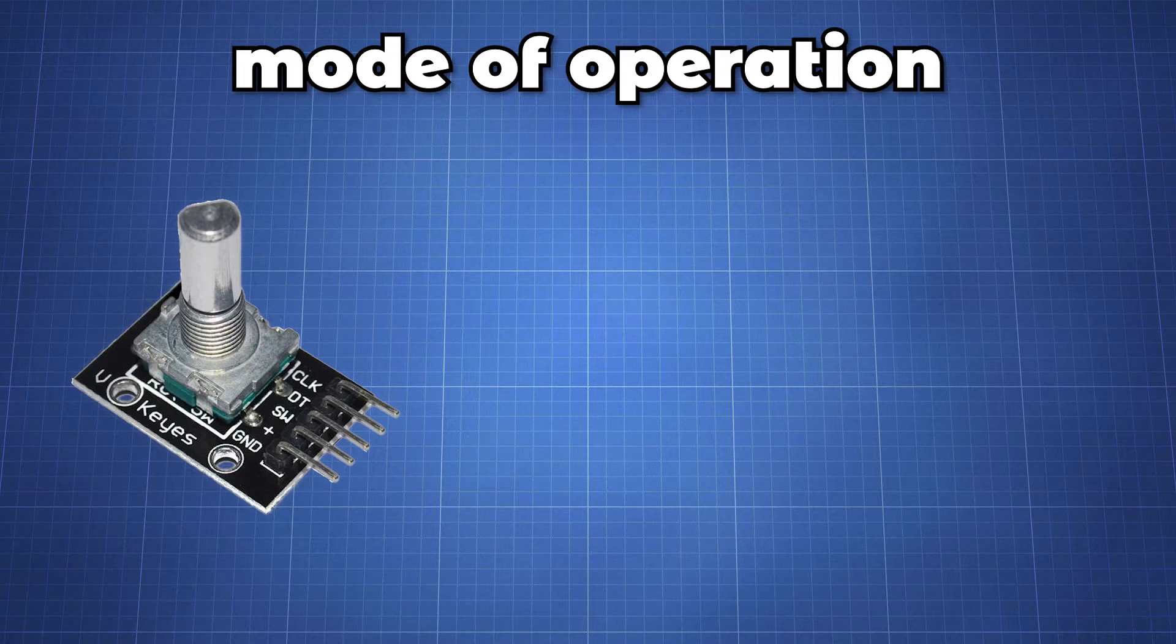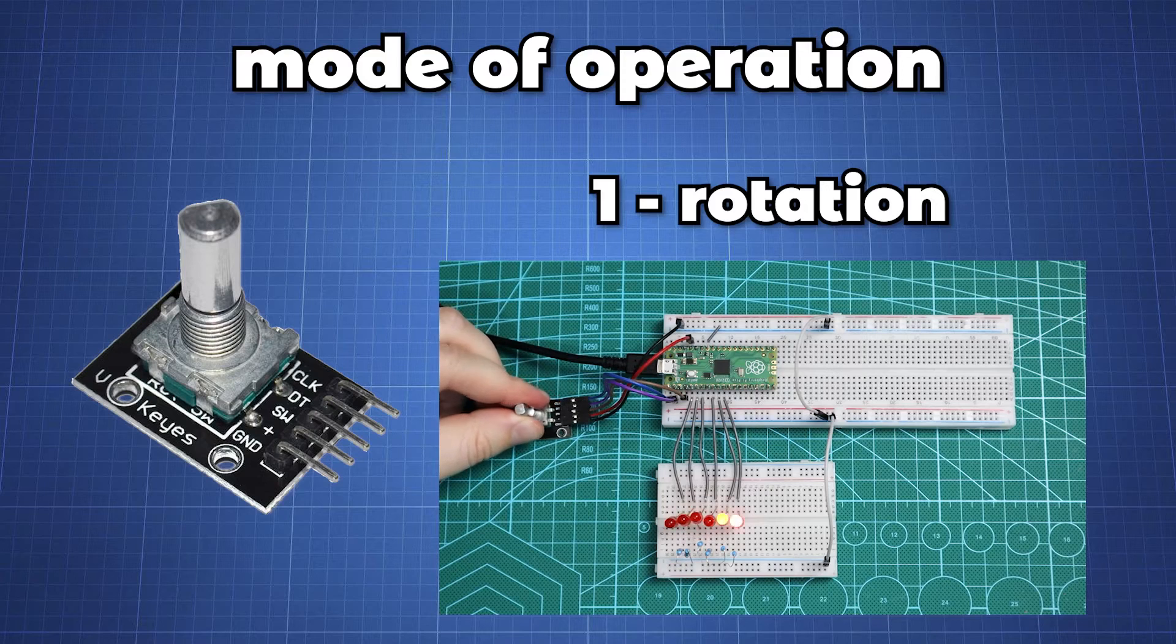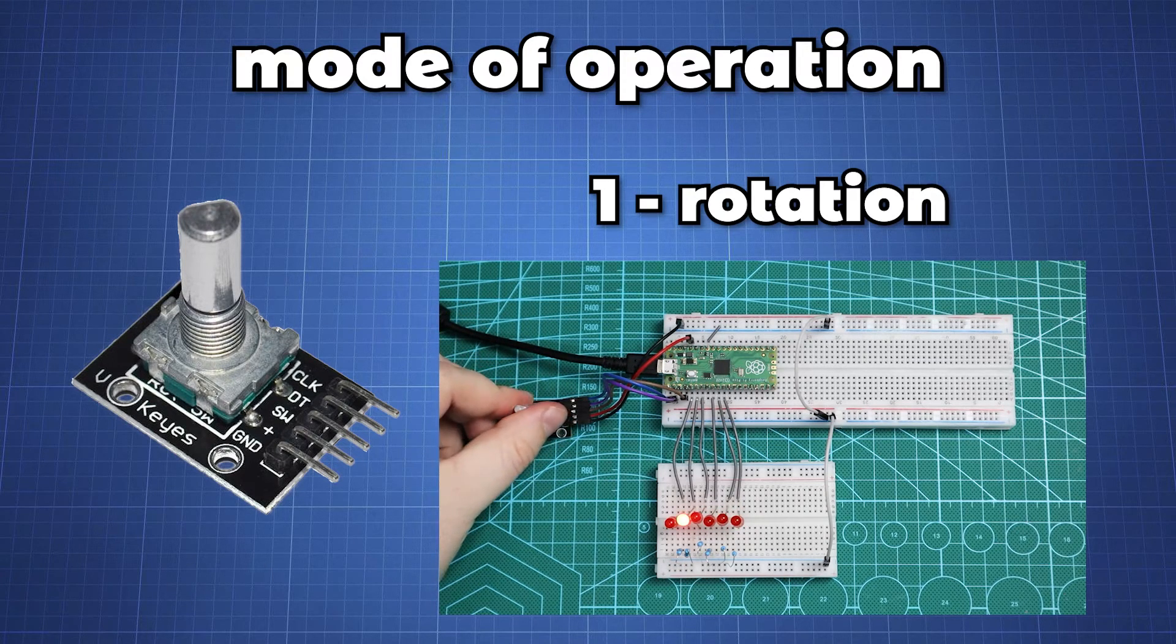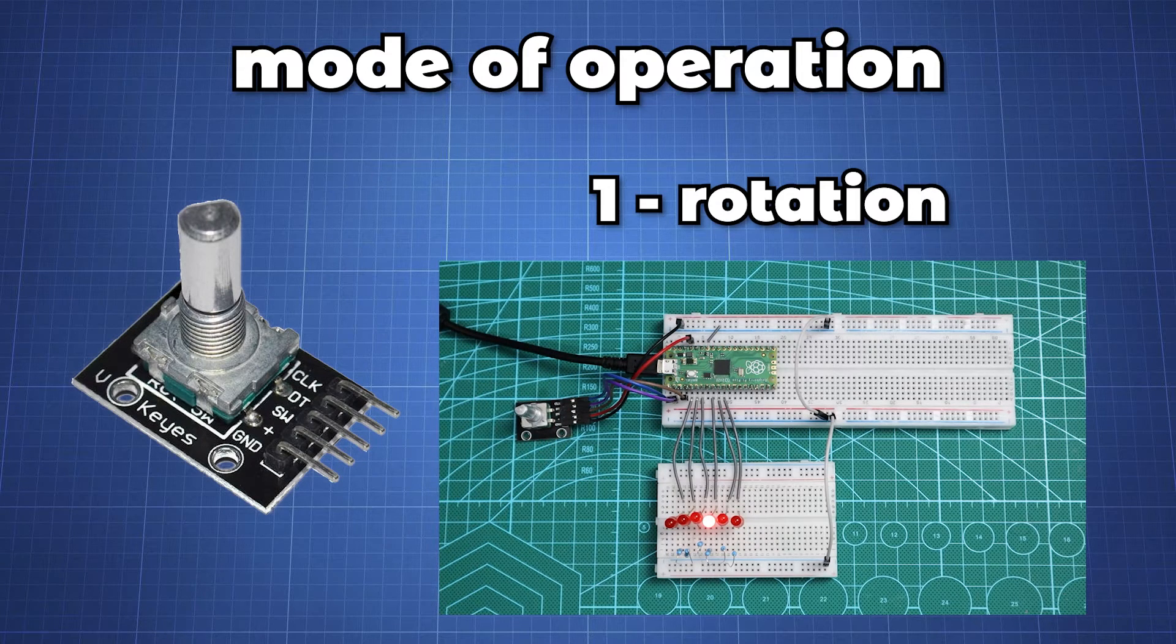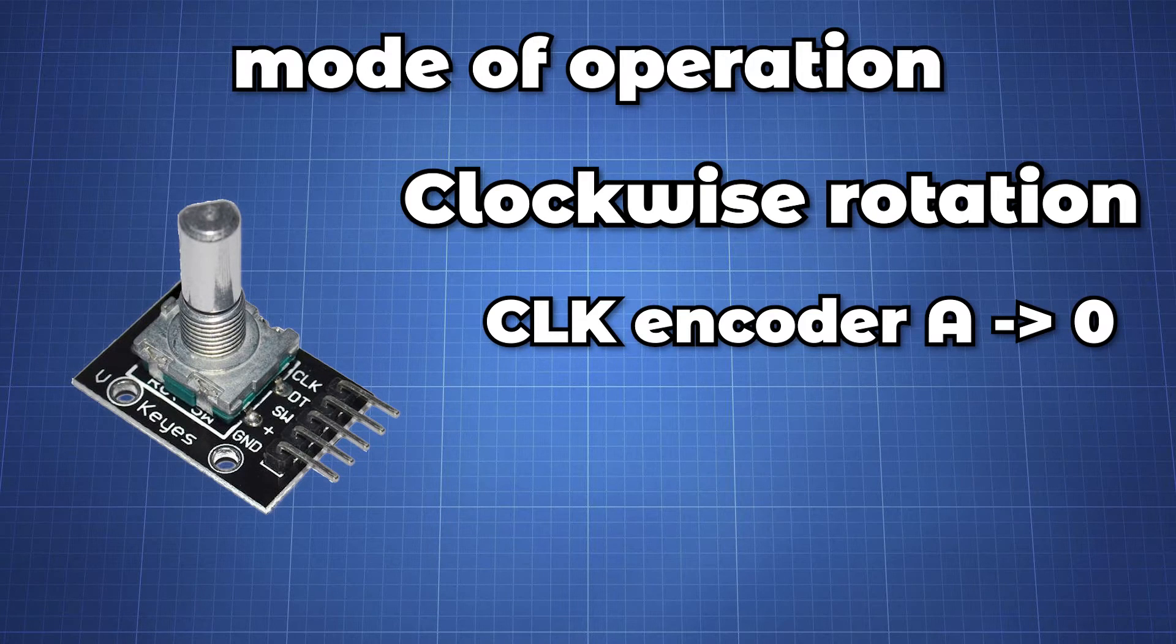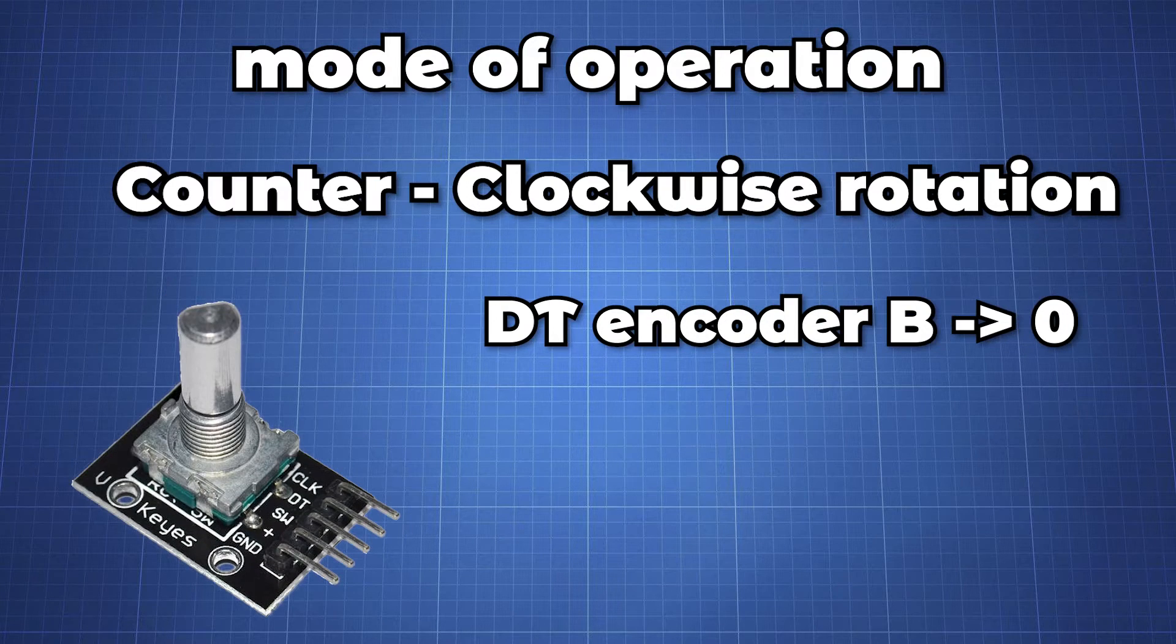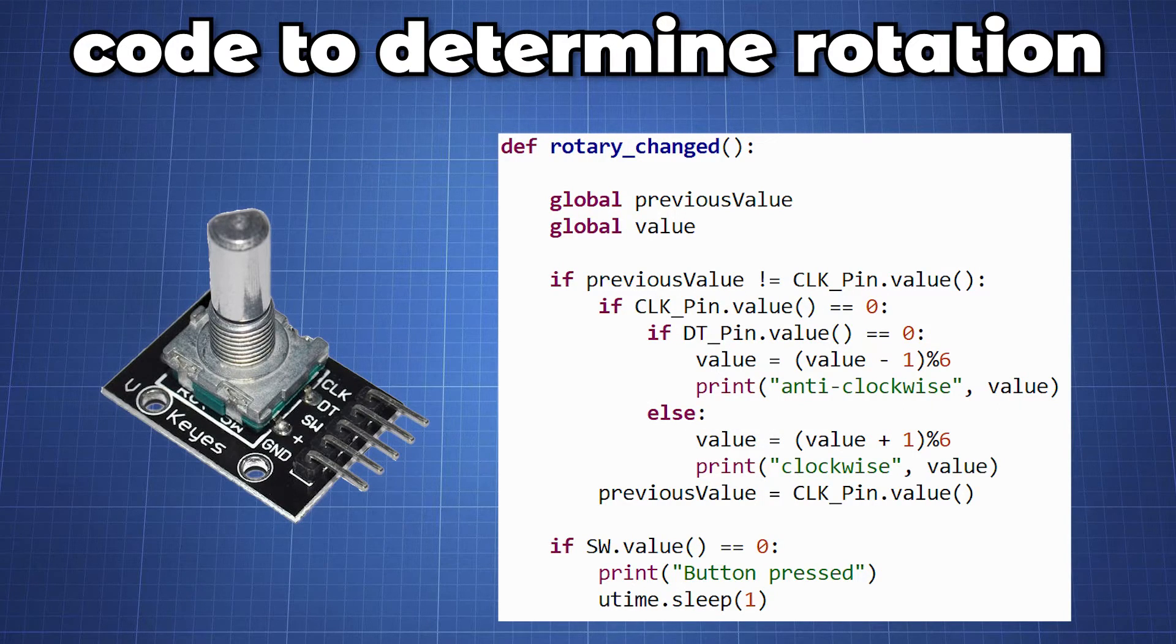The rotary encoder offers two ways of interaction. The first interaction is by rotation whereby you can either rotate the knob in a clockwise or anticlockwise direction. Every time you rotate the knob it produces a low signal on the DT and CLK pins. Rotating clockwise causes the CLK pin to go low first and then the DT pin to go low. Rotating counterclockwise causes the DT pin to go low first and then the CLK pin to go low.